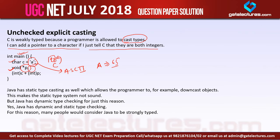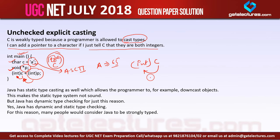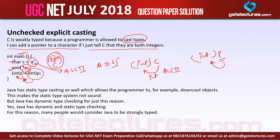P is a pointer, and pointers store addresses in integer format. I can easily add character C (which is 'a') by converting it to an integer, and also add this pointer. When I write (int)C, I am type casting the ASCII value stored in C to integer type; when I write (int)P, I am type casting the address stored in P to integer type. Therefore I can even add a character and a pointer because both are type cast to integer. So we say C is weakly typed because the programmer is allowed to type cast.